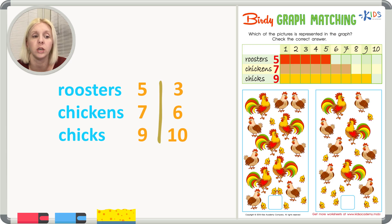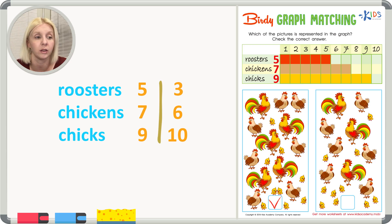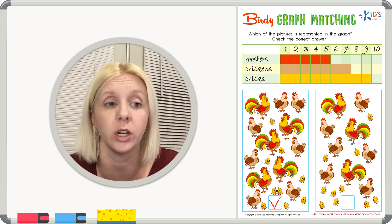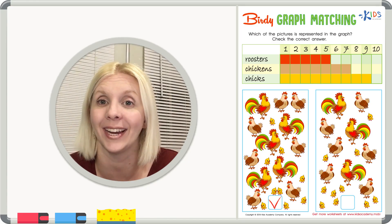The second picture also has too many chicks — ten instead of nine. So which one matches the bar graph information? We already decided it's the first picture. I'm going to put a check right here because this is the correct answer — this is the picture represented by the bar graph. Great job taking that data and interpreting the graph to find the correct answer!